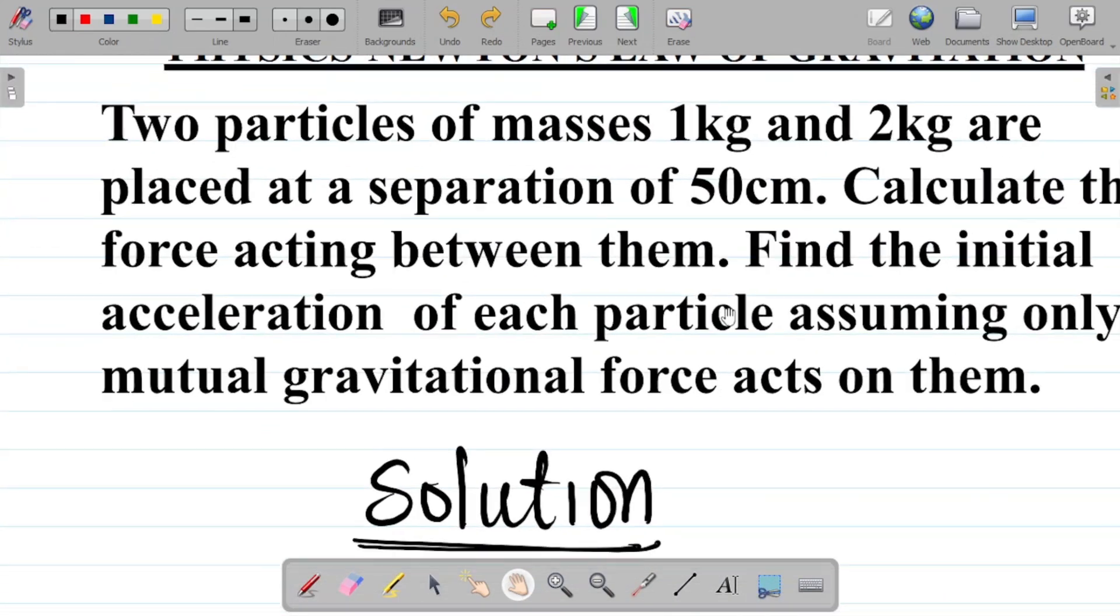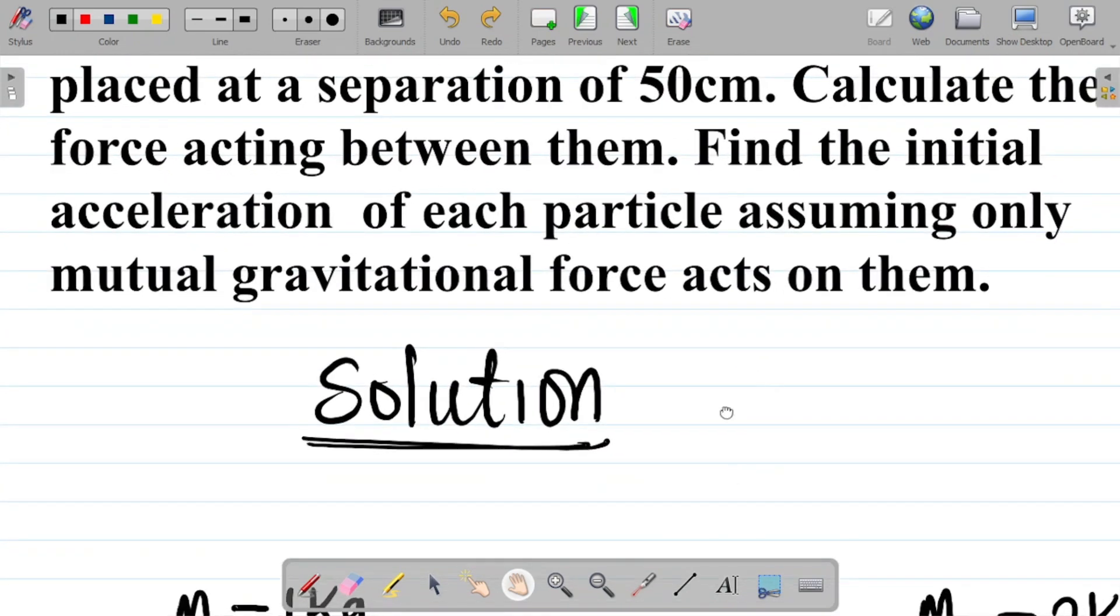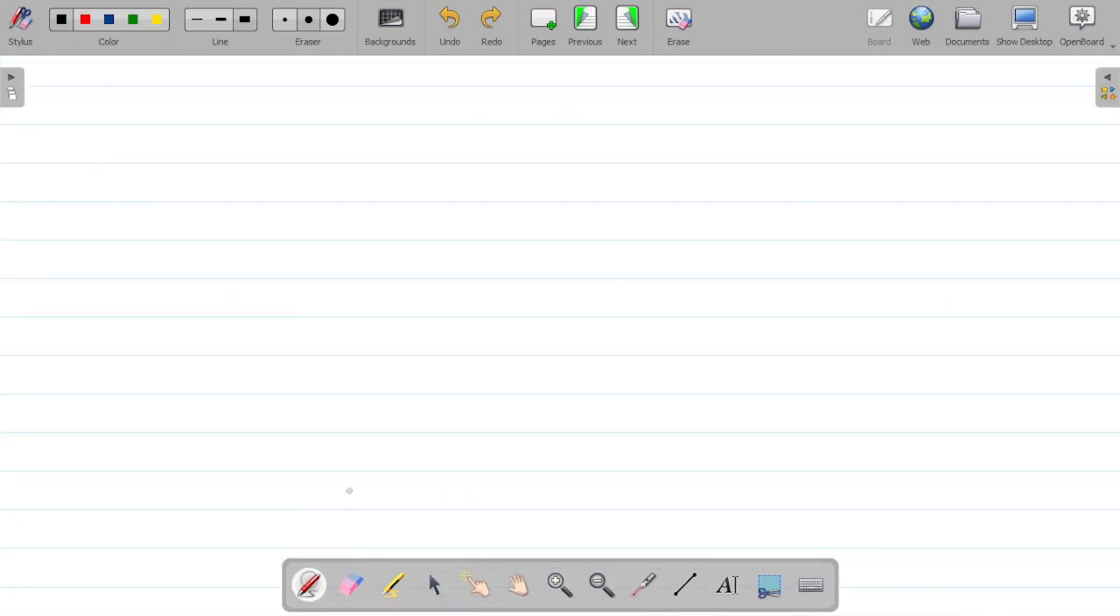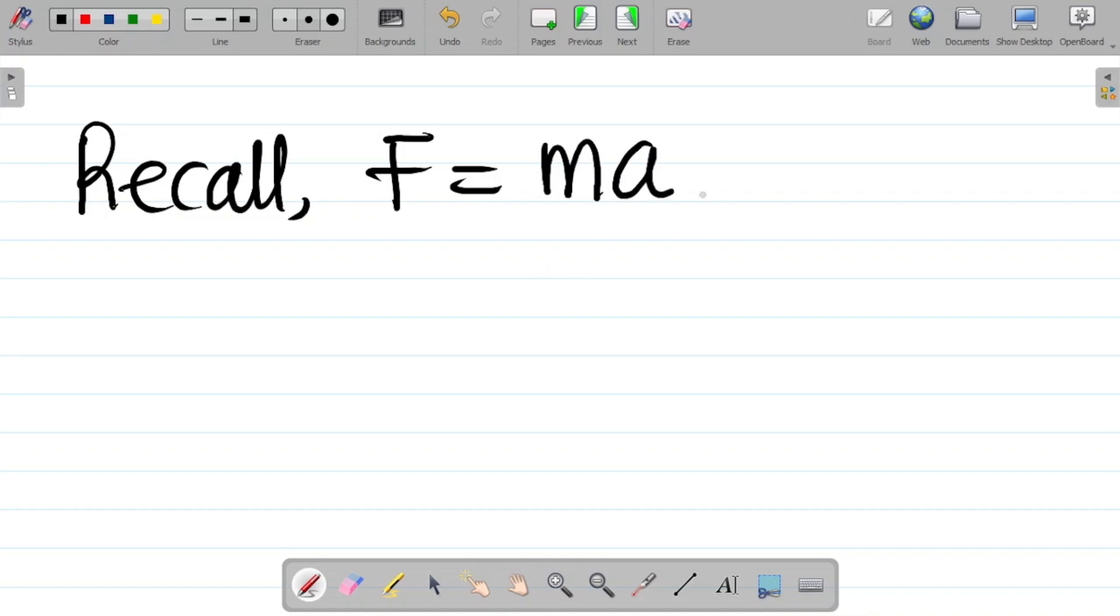We've got to the first part. The second part says, find the initial acceleration of each particle assuming only mutual gravitational force acts on them. How do we find acceleration? Recall from Newton's second law, we said force is equal to mass times acceleration. If I make acceleration the subject of the formula, I'll have to divide this by mass. This cancels, so it means that acceleration is equal to the ratio of force to mass.